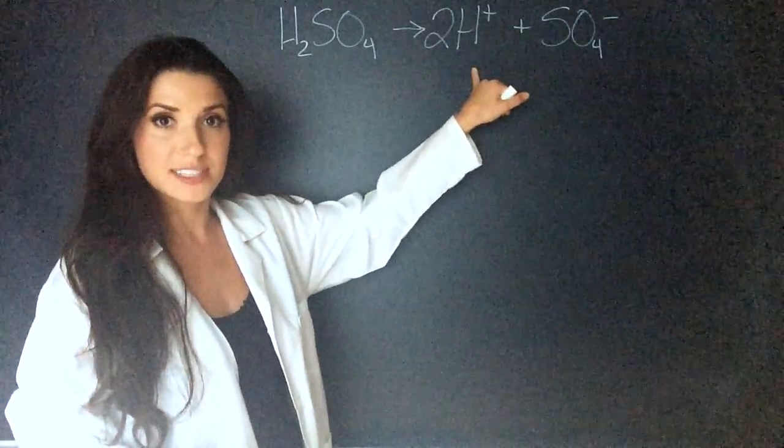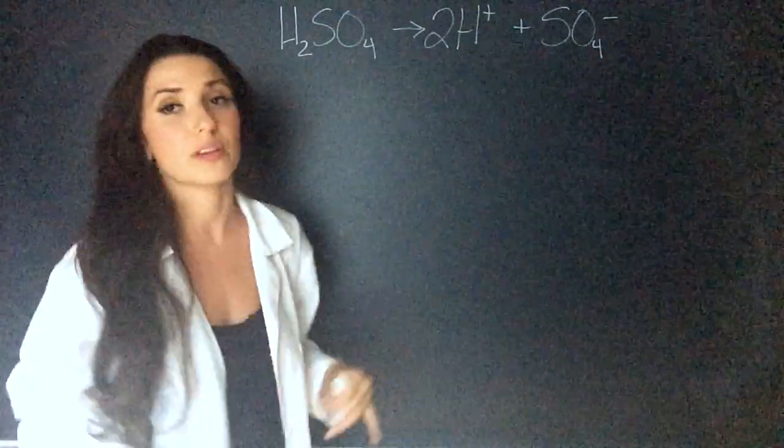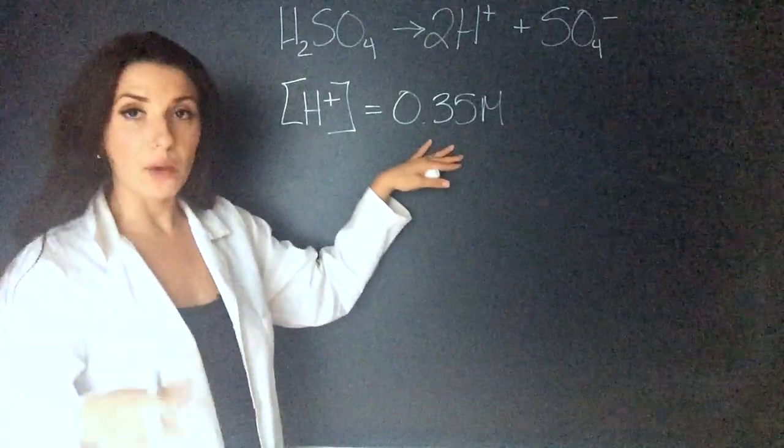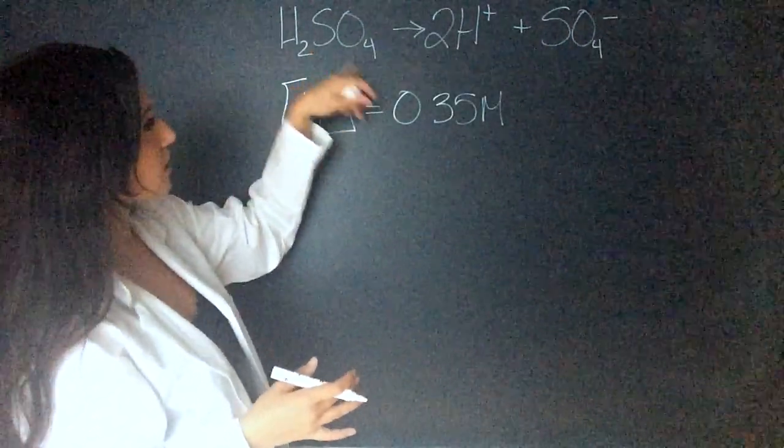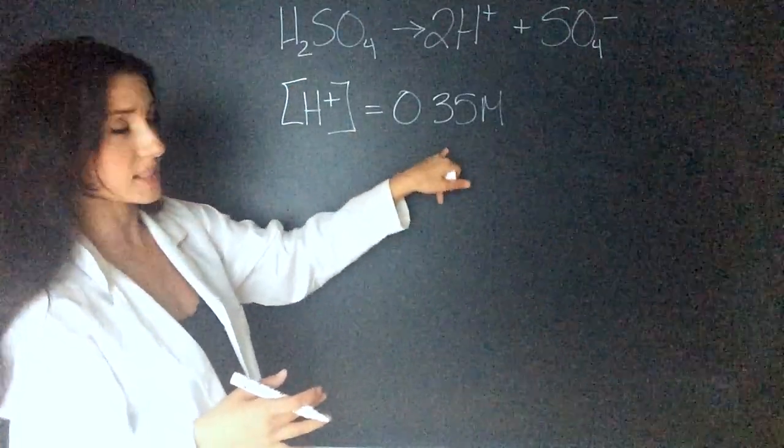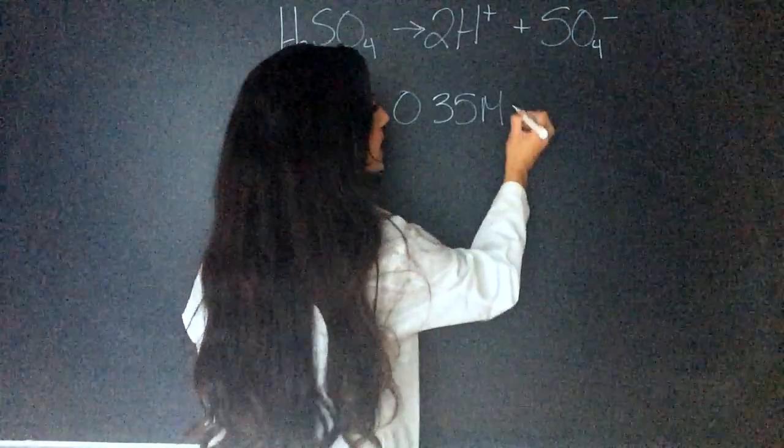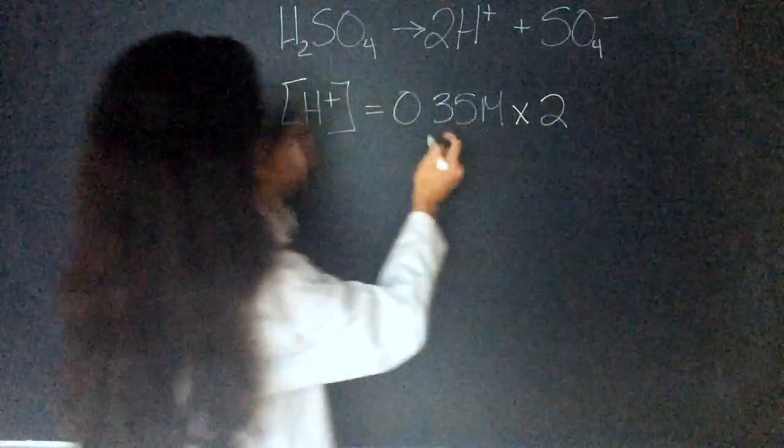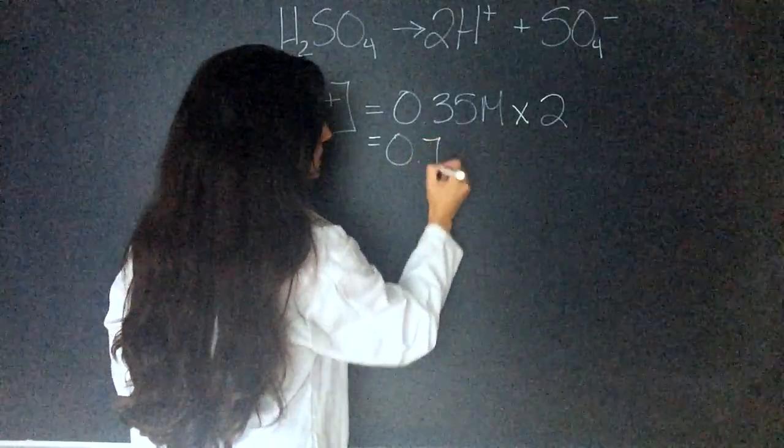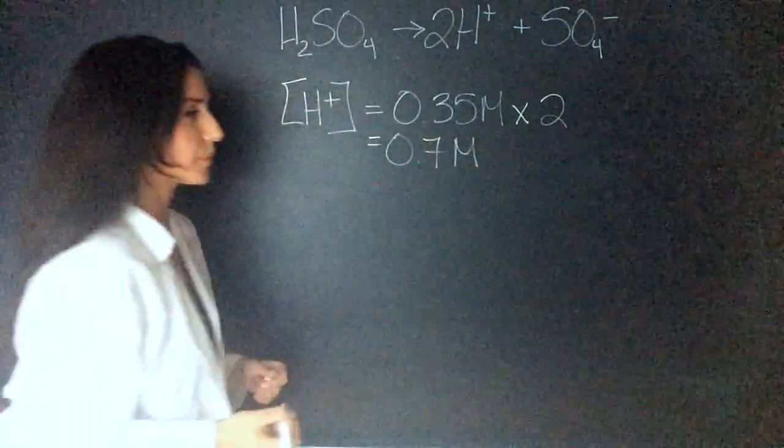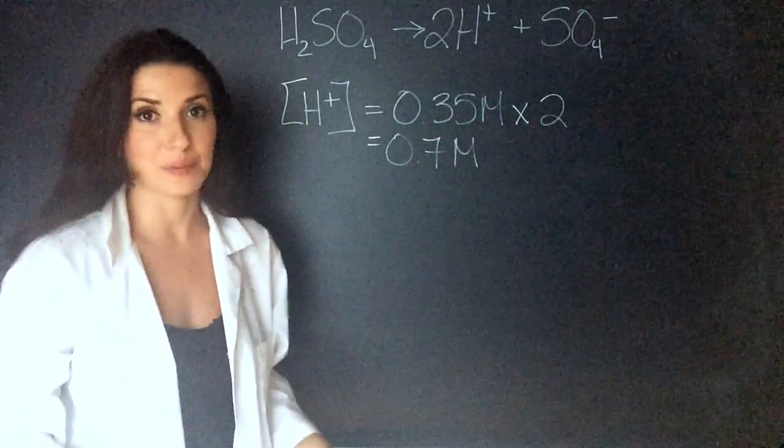Now I know that there are two hydrogen ions for every molecule of H2SO4. So now we know that the concentration of the hydrogen ions is going to be the concentration of the sulfuric acid, which they told us in the question, times two, because that's the stoichiometry coefficients. We do that math and we get 0.7 moles per liter. Now we can plug that in to find the pH.